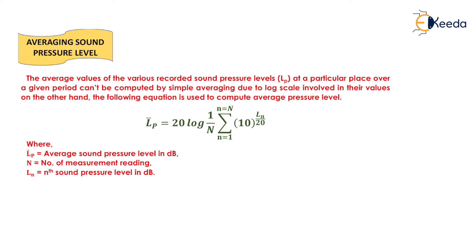Now, the next concept is the averaging sound pressure level. The average value of the various recorded sound pressure levels, that is L_p, at a particular place over a given period cannot be computed by simple averaging. Why? Because log scale is involved in their values. That's why we don't calculate it by simple averaging due to log scale involved in their values.